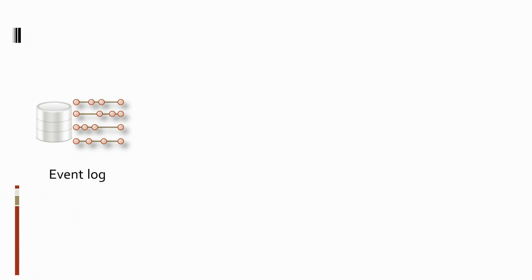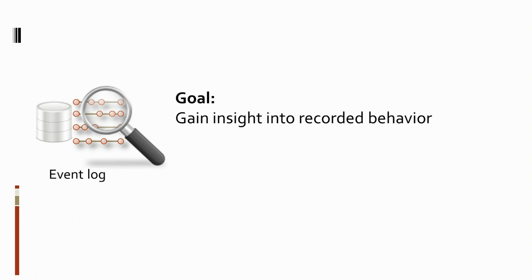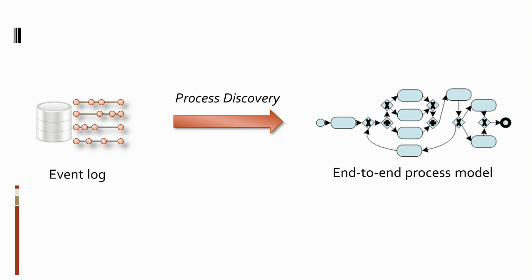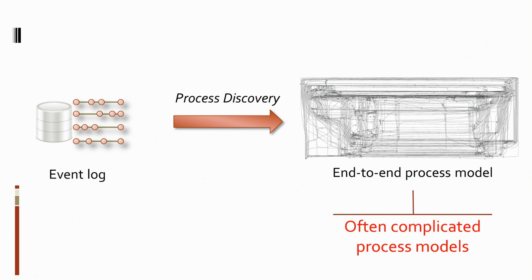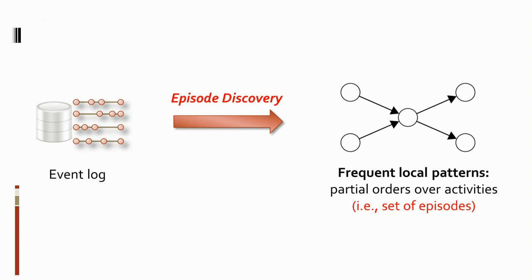Consider an event log — a multiset of traces we know little about. Our goal is to gain insight into the recorded behavior, so we turn to process mining to analyze the data in the event log. In traditional process discovery we would mine an end-to-end process model that tries to explain all the observed behavior. However, in practice, these end-to-end process models are often rather complicated and provide little insight. Therefore, we turn to episode discovery, which tries to explain the most frequent behavior in a set of episodes.